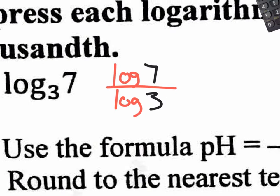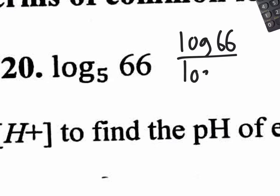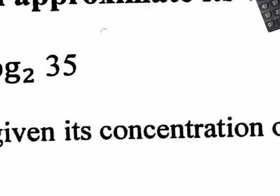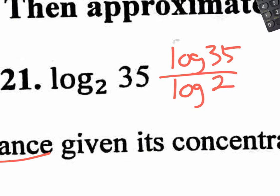Let's do number 20 since we're on this already. Change that to common log: it would be common log of 66 on top and common log of what on the bottom? There you go — that's it, it's easy. Next one: if they tell you to change to common log, it's going to be common log of 35 over common log of 2. Now, please don't confuse this with the quotient property. The quotient property is completely different — it's when you have one single log of a fraction and you change it to a subtraction of two logs. Don't confuse that with the change of base formula.